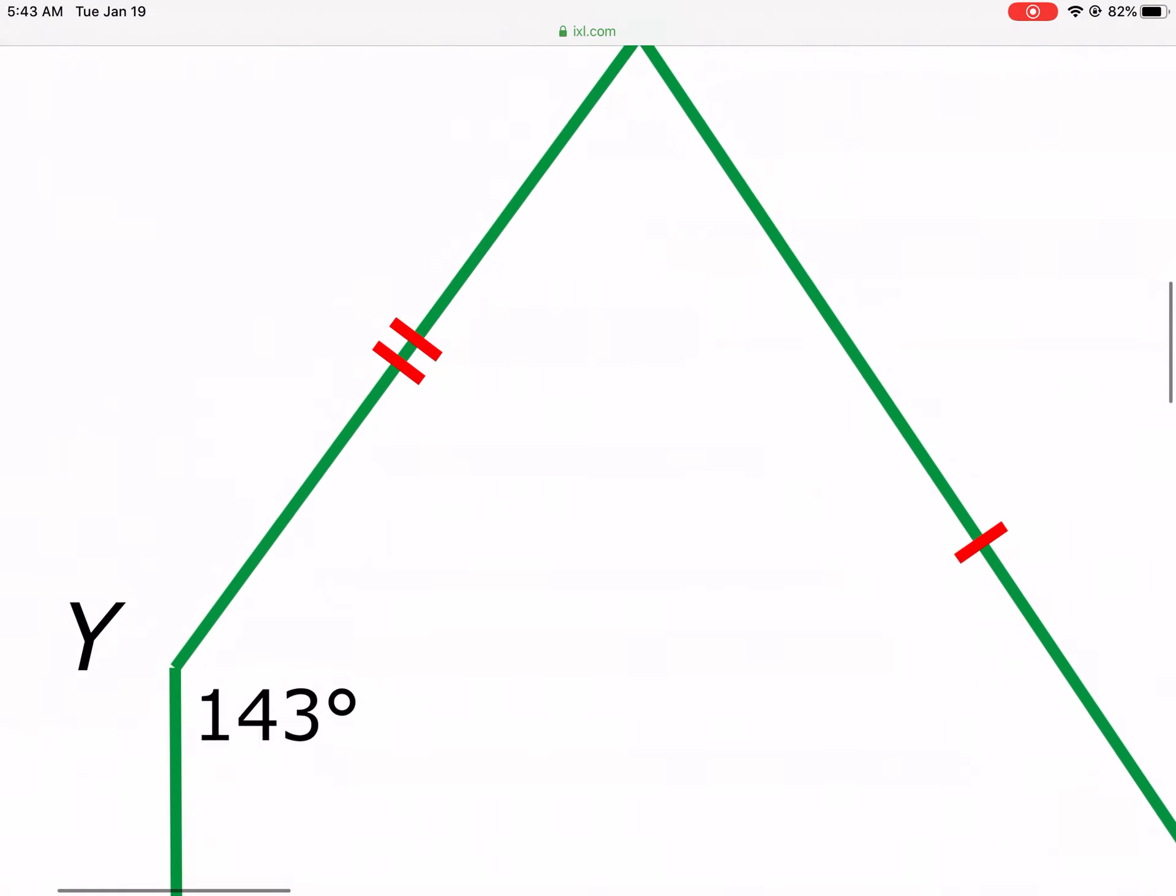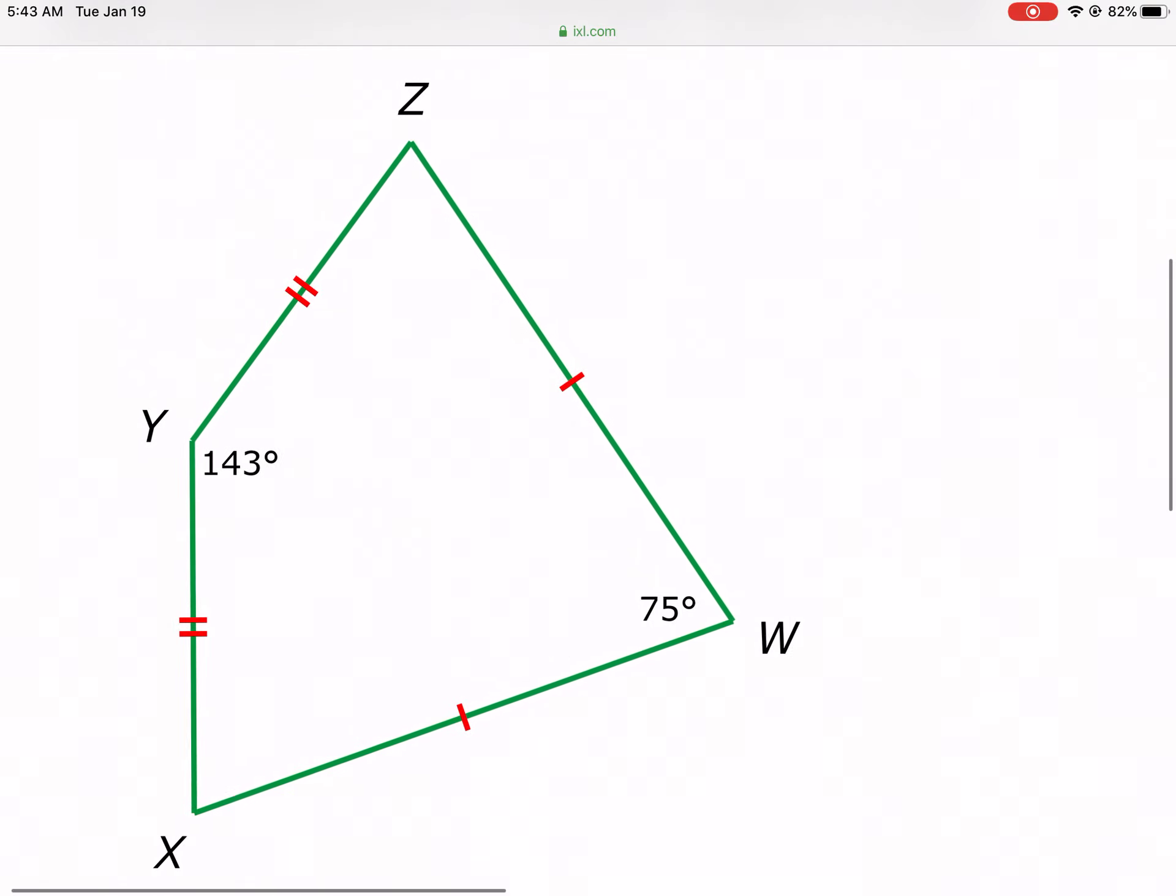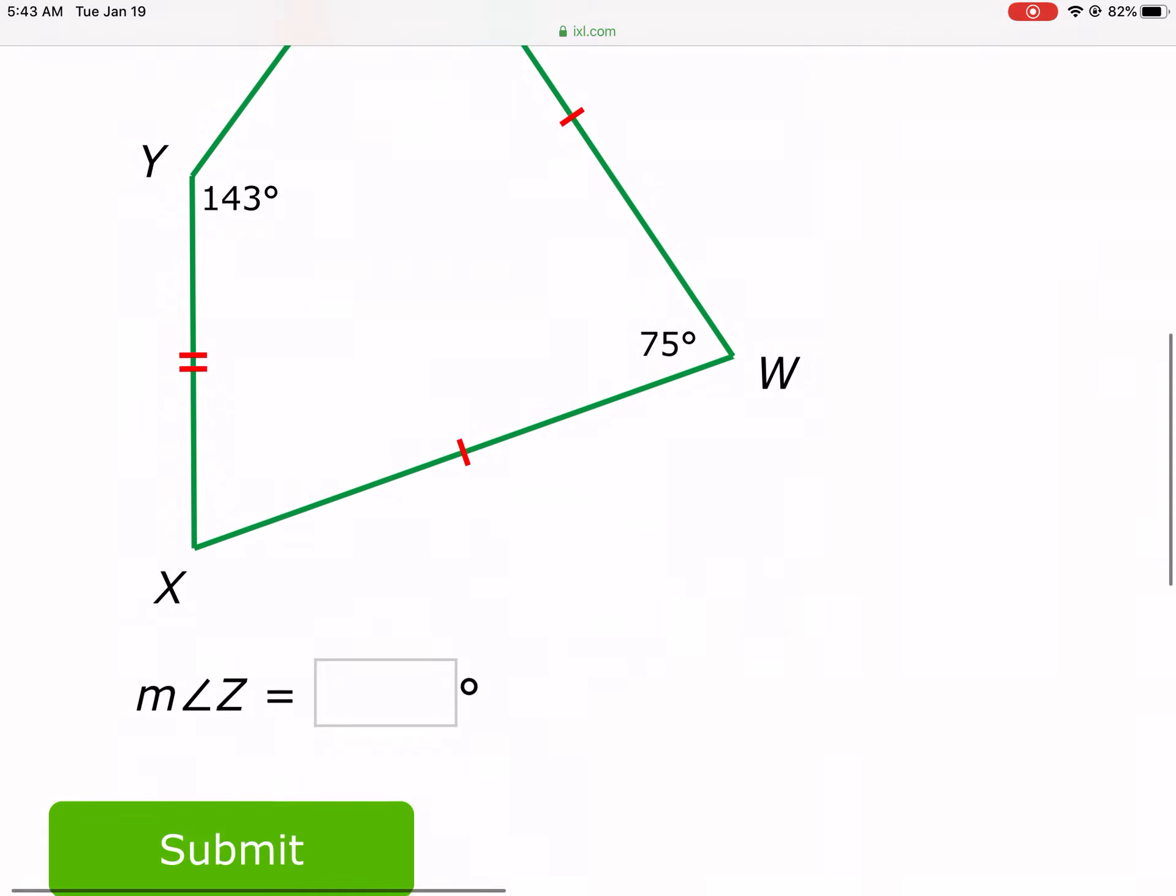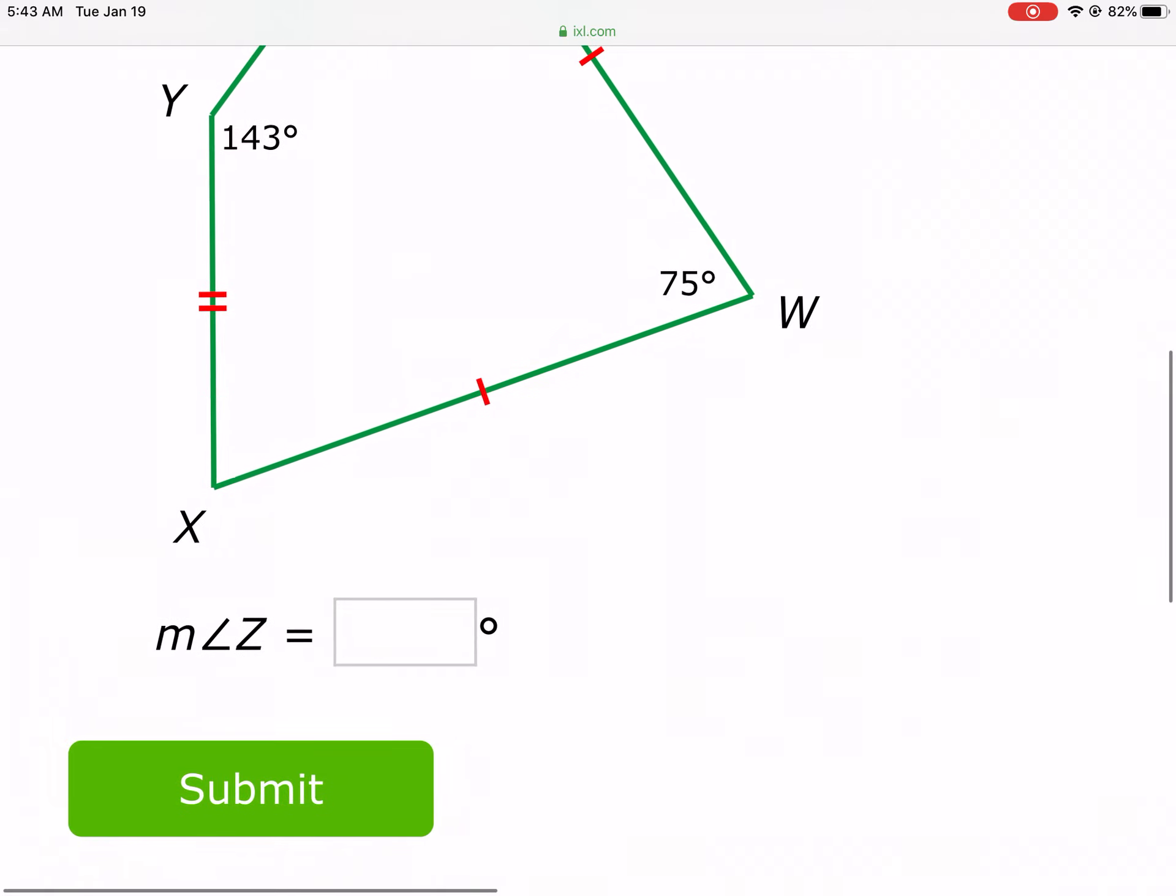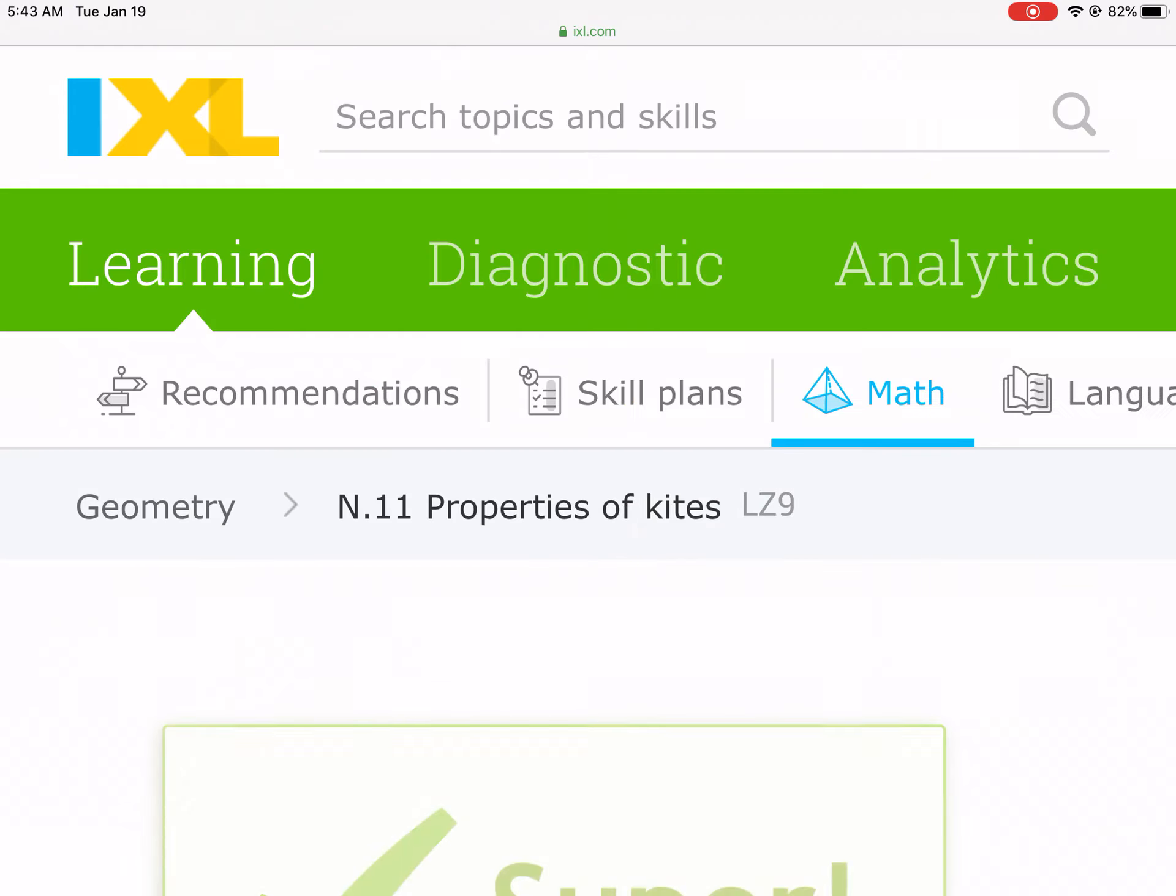142 gets split between Z and X. So what I need to do from here is take 142, divide it by two, because there's two angles I'm splitting it evenly between, and it's 71. So measure of angle Z, which is equal to X, is going to be 71. Submit that, there we go.